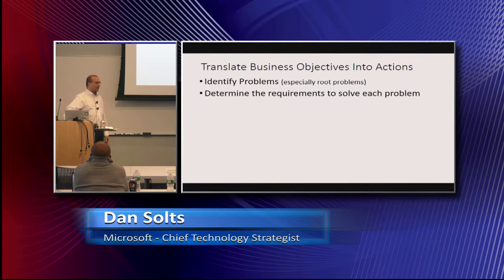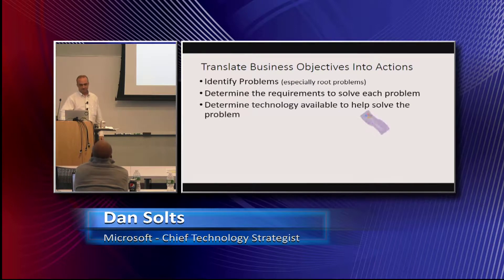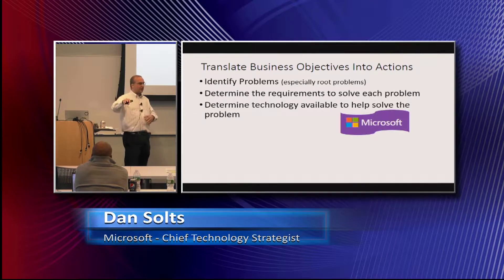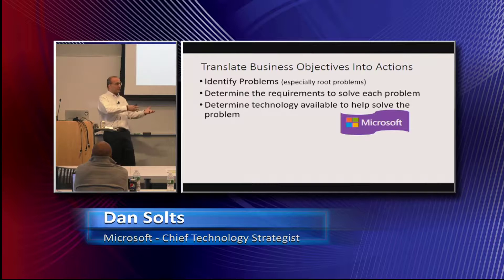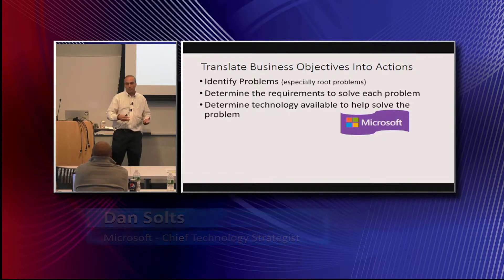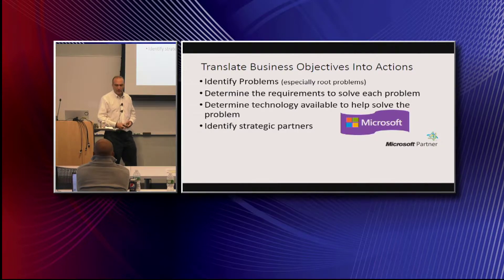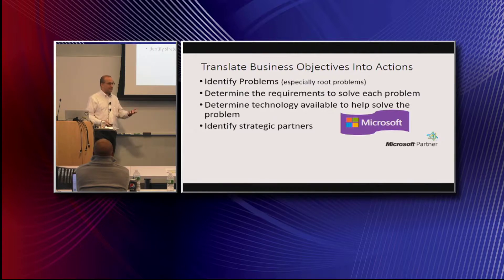Determine the requirements to solve each of those problems — what do we need the solution to be? Then determine the technology available to help solve that problem. In terms of a bridge, we already know about suspension bridge capabilities and underwater tunneling — we just have to research how to apply that technology in our business. Then identify strategic partners — lots of people can help us. Strategic partners could be internal or external; other pieces of the business may have expertise you want to leverage.